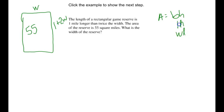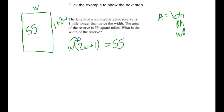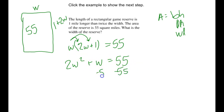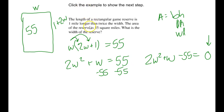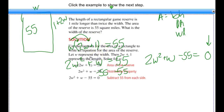The area equals length times width, so I multiply W by 2W plus 1 and set it equal to 55. Using the distributive property, I get 2W squared plus W equals 55. To solve, I subtract 55 from both sides to get 2W squared plus W minus 55 equals zero. We want everything on one side equal to zero because of the zero product property. There are no common terms, so I have to continue with factoring using the table method.